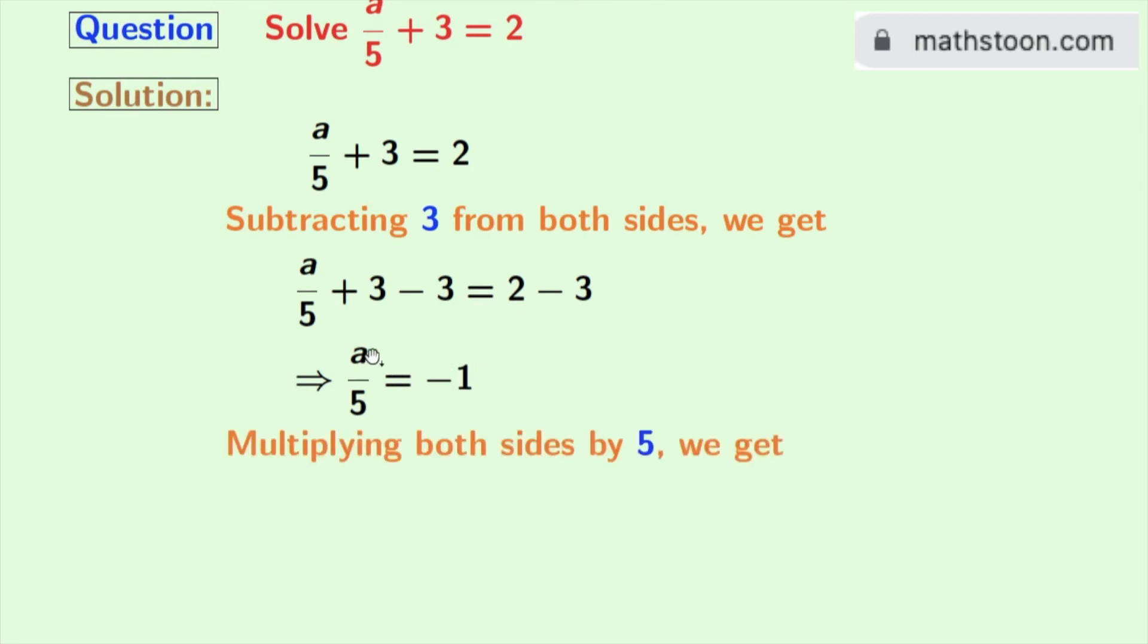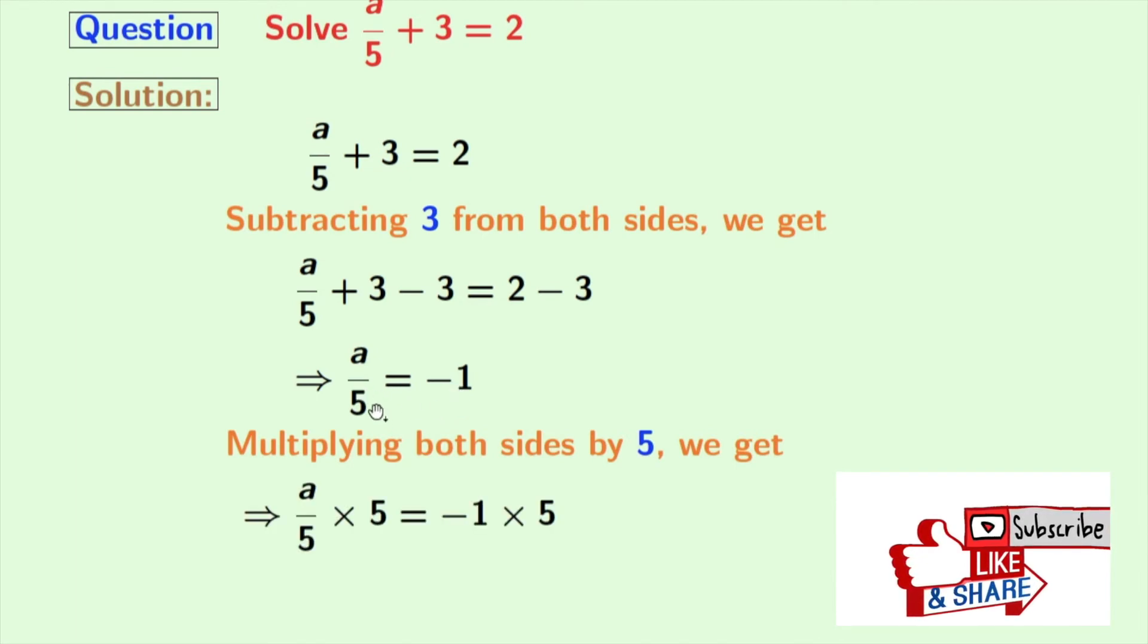Now, we will multiply both sides by 5. Doing so, we get a by 5 times 5 is equal to minus 1 times 5.